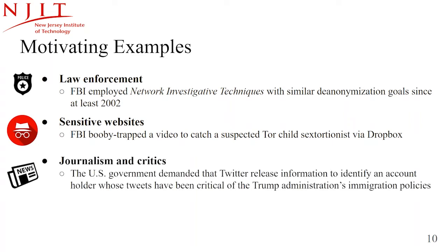Leaky resource attacks can reveal the identities of anonymous government critics by targeting their social media accounts. When a target critic visits an attack page with links to leaky resources for a list of candidate accounts, a successful request to one of the links lets the attacker learn which candidate account belongs to this anonymous critic. Another way to de-anonymize critics is to use the account-linking strategy — as an example, the US government demanded Twitter release information to identify an account holder whose tweets criticized the Trump administration's immigration policies.